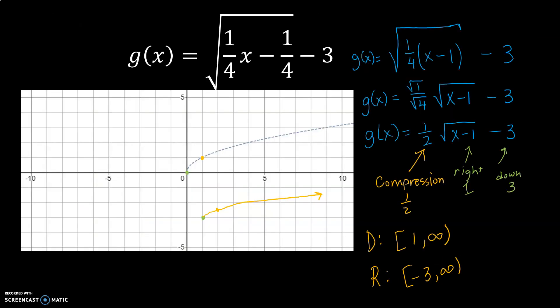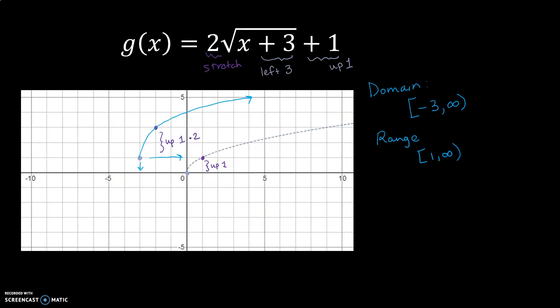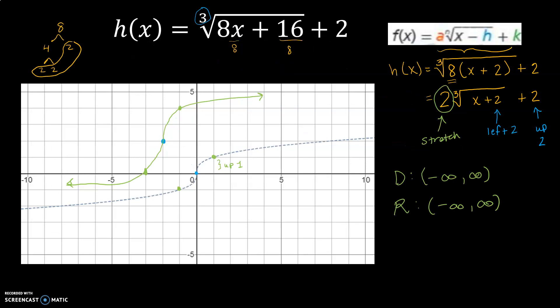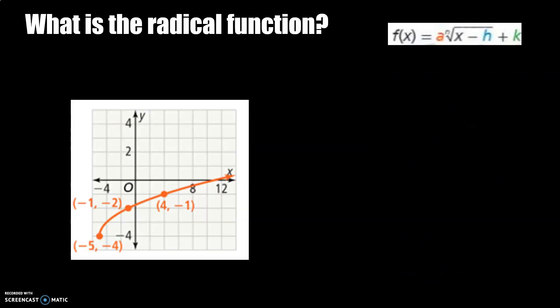So the skill you just completed for these three problems is graphing a transformed radical function. The next section is about identifying what the radical function was before the transformation happened.